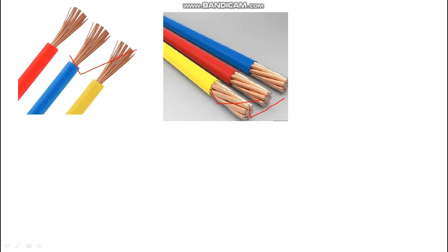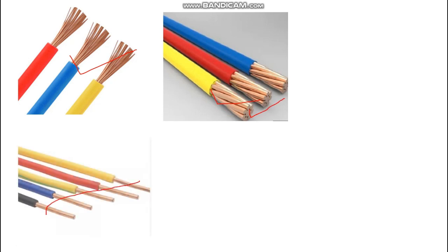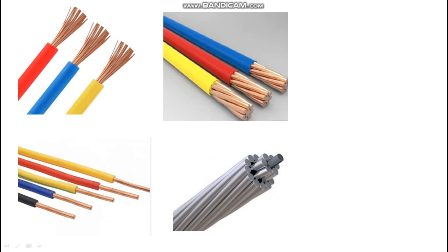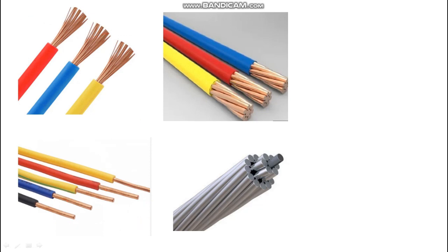Here we can see power cables, motor cables, transmission and distribution lines — all are multi-strand cables. The ACSR cable conductor used in transmission lines is also multi-strand. AC current flows more in multi-strand cable and less in single-strand solid wire, because the resistance of multi-strand cable is less.